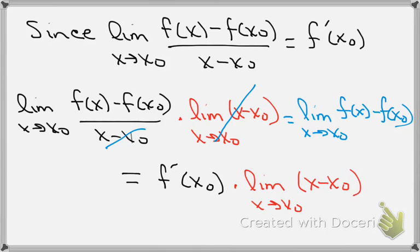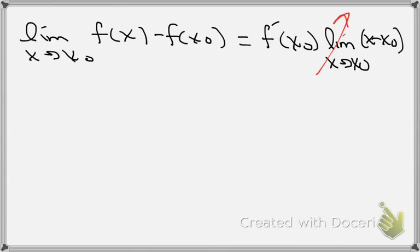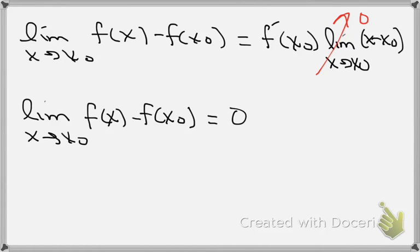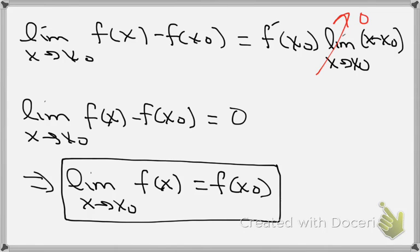That equals f prime of x naught times the limit as x goes to x naught of x minus x naught. This has a real benefit because that limit on the right hand side — as x goes to x naught of x minus x naught — goes to 0. So we end up with the limit as x goes to x naught of f of x minus f of x naught equals 0.